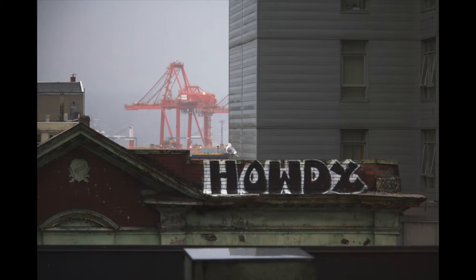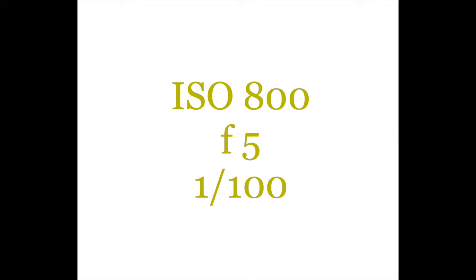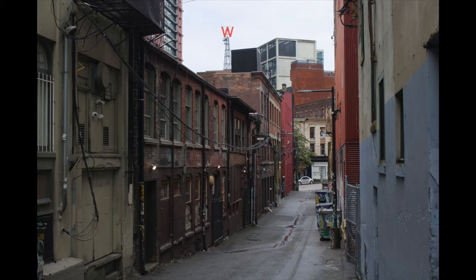This was the view from the Victorian Hotel — the oldest continuously running hotel in Vancouver. As you can see in the background, it was overcast. I did not bring a tripod with me, so the next best thing was bumping up the ISO to 800 in order to have a stable shutter speed of 1/100th of a second.